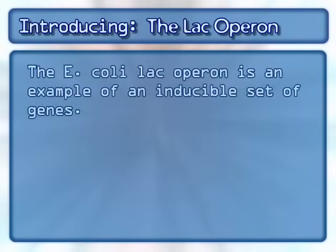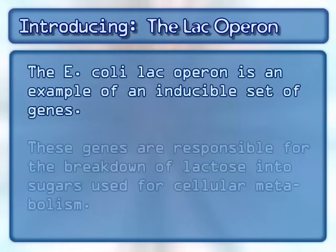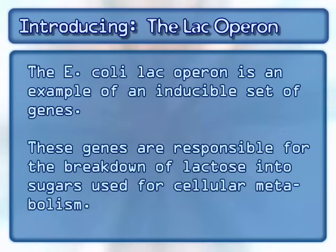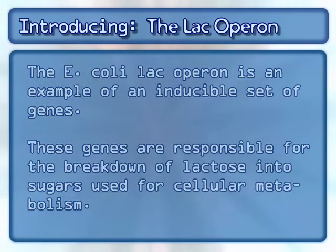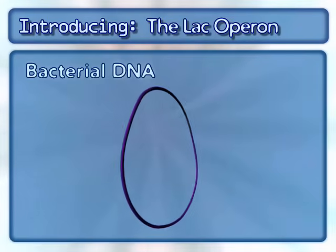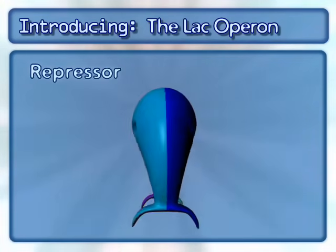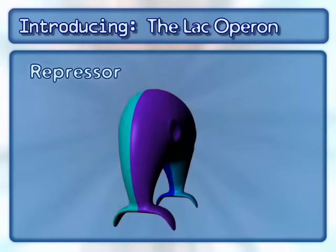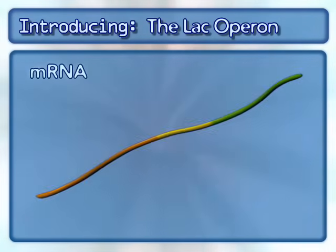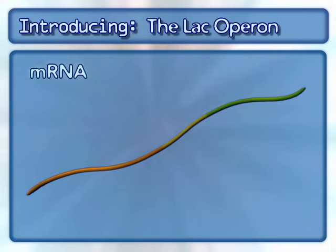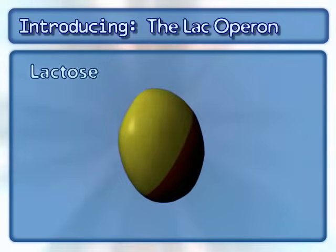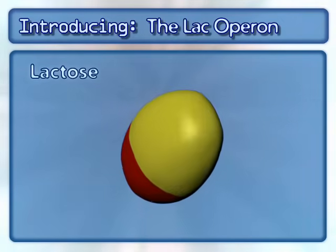The E. coli lac operon is an example of an inducible set of genes. These genes are responsible for the breakdown of lactose into sugars used for cellular metabolism. This inducible system also involves bacterial DNA, a repressor, mRNA, and the sugar molecule lactose.